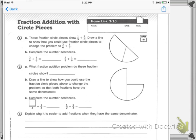It says, these fraction circle pieces show one-third, plus one-sixth. Draw a line to show how you could use a fraction circle pieces to change the problem to two-sixths, plus one-sixth.